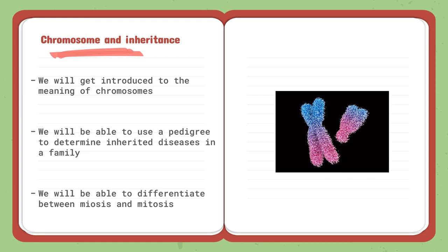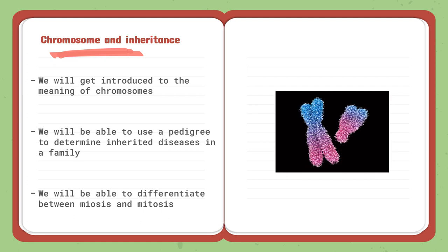Moving on to the second lesson: chromosomes and inheritance. We will get introduced to the meaning of chromosomes, what homologous chromosomes and sister chromosomes are, and how to identify them. We will also be able to use a pedigree to determine inherited diseases in a family. A pedigree is a chart that flows from one generation to the other, showing what diseases can be inherited from one generation to the next.